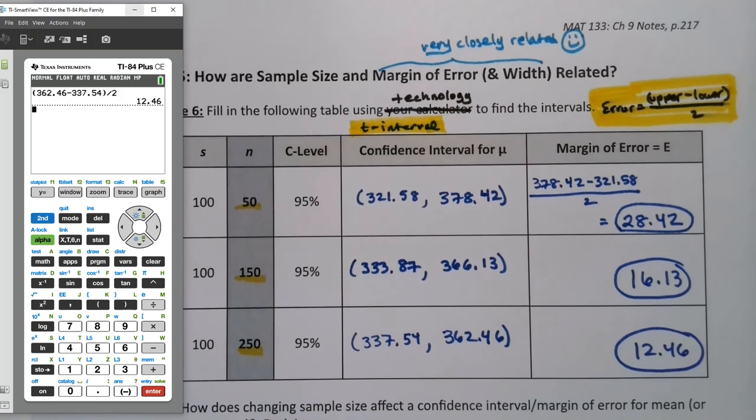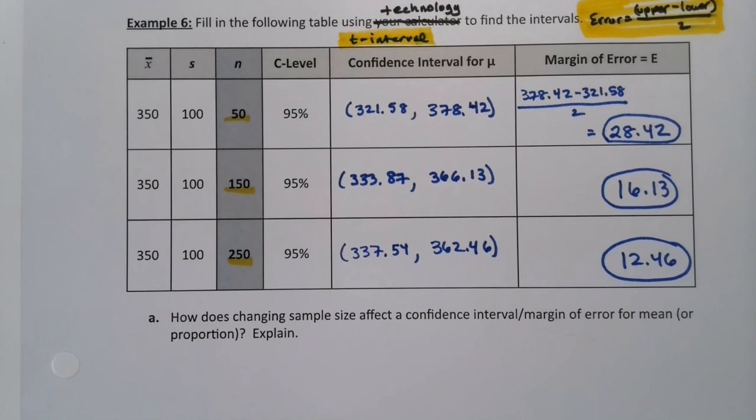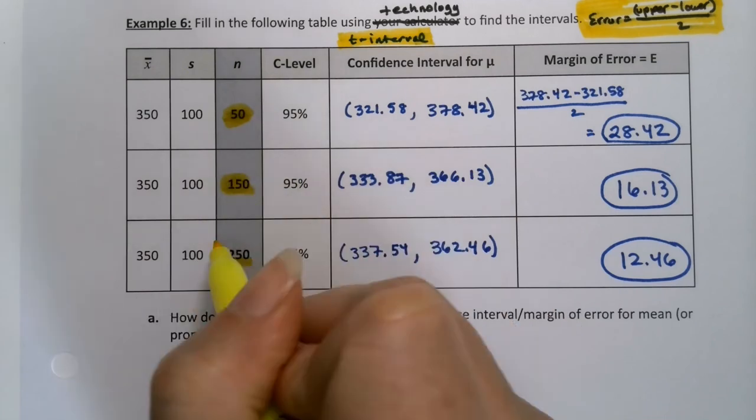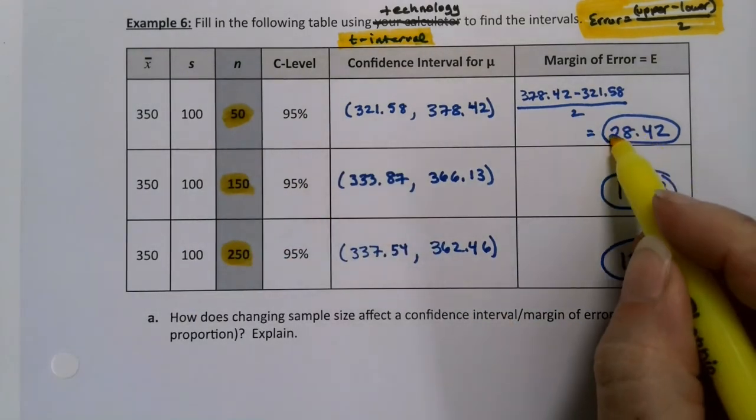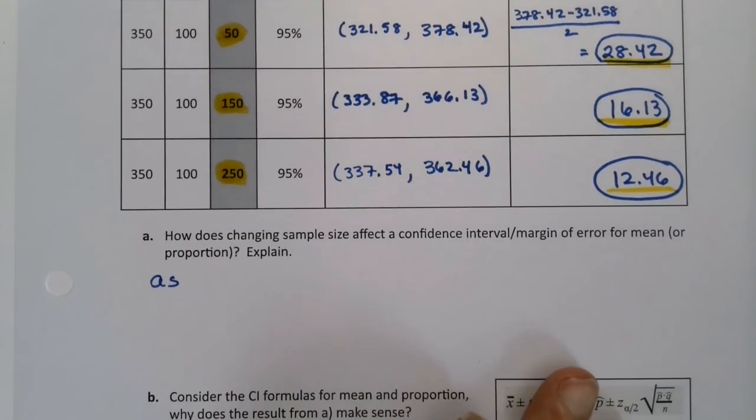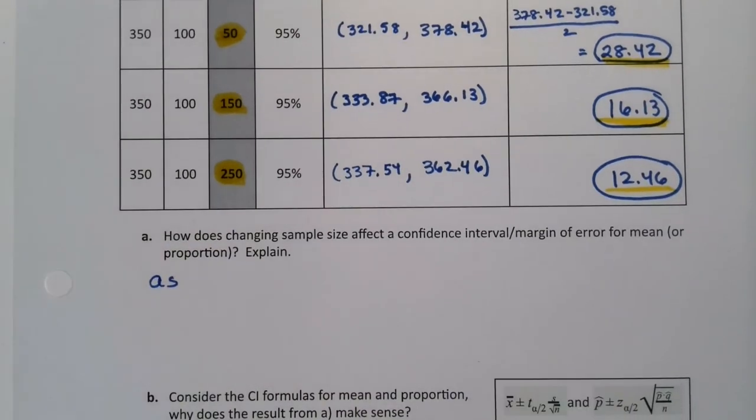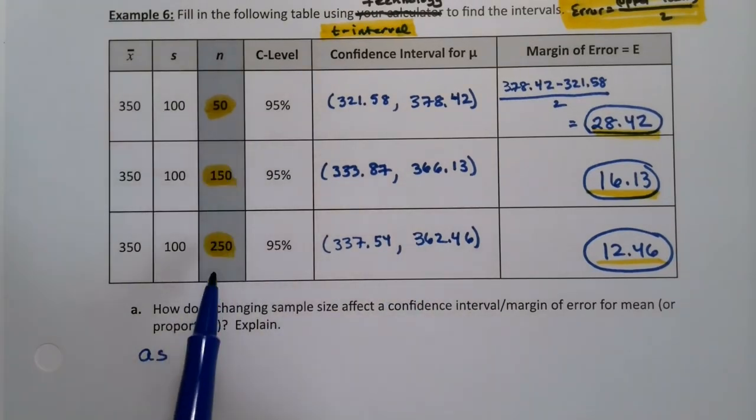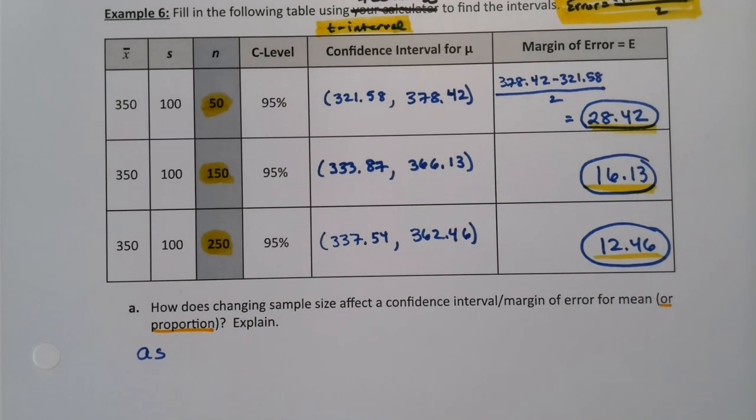So now we got to put this together. What's the moral of the story here? As we increase our sample size, as we increase from 50 to 150 to 250, look at what happens to the error. It shrinks. It's decreasing. So as n increases, and I'm going to write that as, because that's what this is asking. Changing the sample size, how does changing the sample size affect a confidence interval margin of error for the mean? Or proportion, right? We did means here, but it would work the exact same way with proportions. So that's why I wrote 'or proportions' right here, because even though we didn't do proportions in this particular page, it would work the same way.